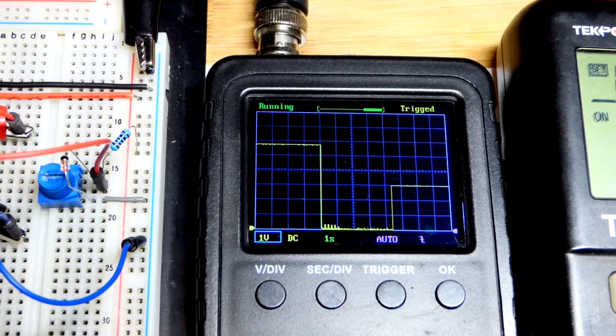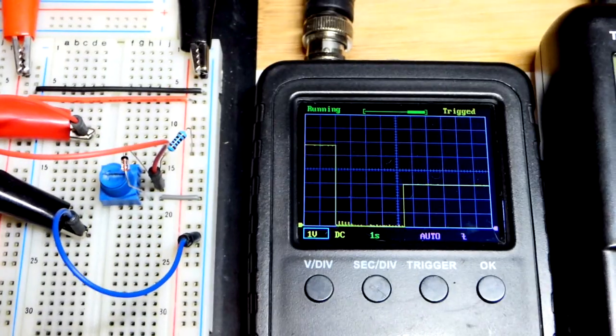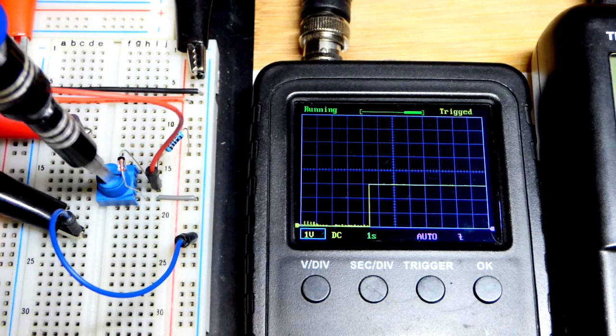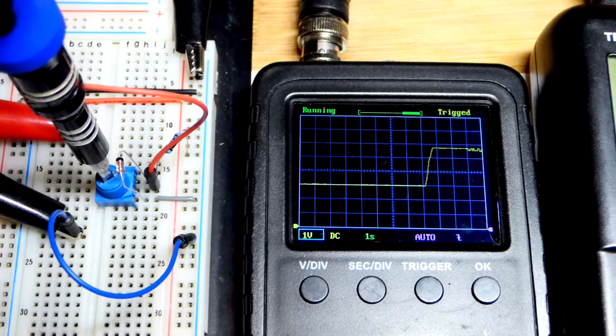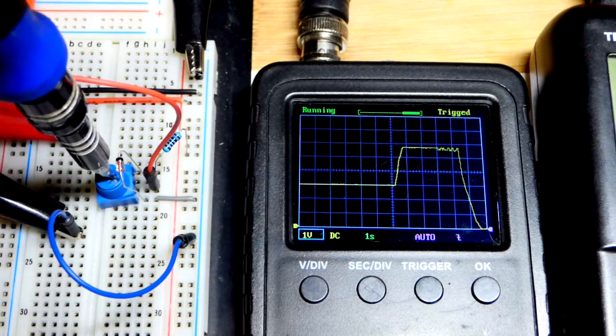The trim pot set about halfway and we have about three volts. So of course, as I turn the trim pot, that'll go up. If we go up to the full about 5.6 volts approximately, and then down to about zero.